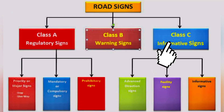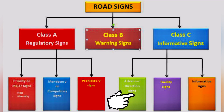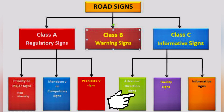Class C signs are informative signs with three subdivisions. The first is advanced direction signs, which help you understand where you're going when traveling — you can know the name of a place or road so you won't get lost. If the sign has a green color, it represents a major road. It will also have the letter A — a yellow-colored A represents a major road, while remaining letters represent minor roads.